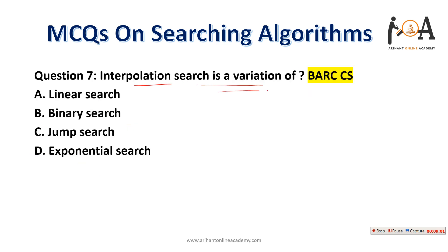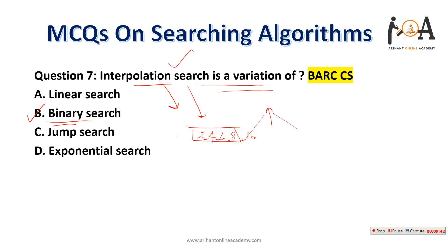Question seven: interpolation search is a variation of which algorithm? It is a variation of binary search. While binary search always goes to the middle element then left or right, interpolation search works best when elements are uniformly distributed (e.g., 2, 4, 6, 8, 10). Instead of always choosing the midpoint, it estimates the position of the target element based on its value. The answer is binary search.